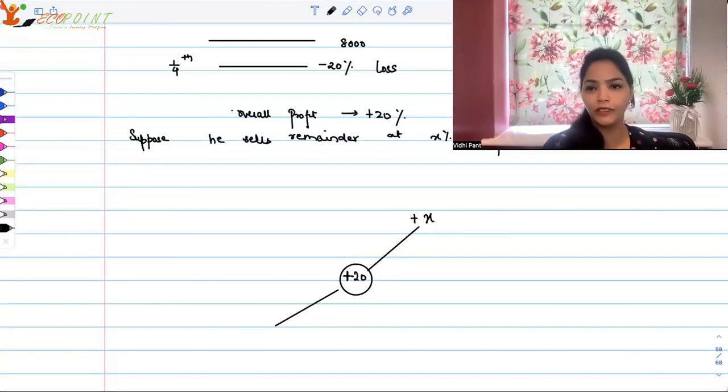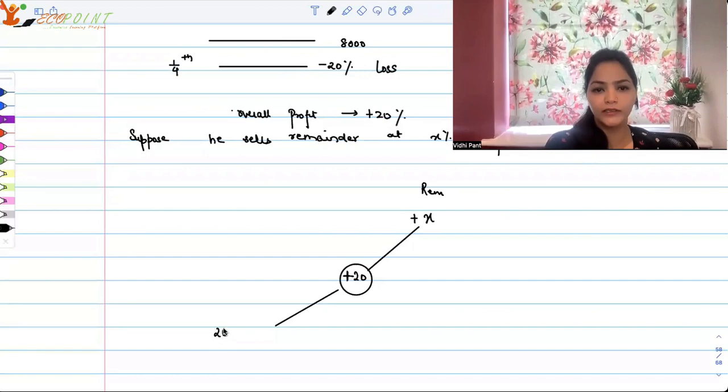So if you want to use the method of allegation and mixture in this, so how you will go about it. So overall profit, we know that we want 20% profit overall. Suppose X is the profit on the remaining. This is the remaining. Okay, so on the remaining, X is the profit.